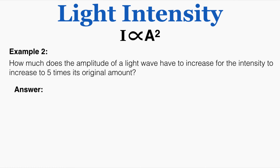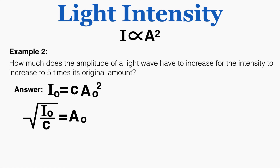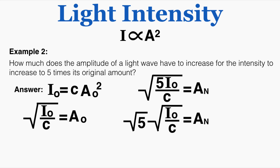In example two: how much does the amplitude of a light wave have to increase for the intensity to increase to five times its original amount? Using the original and new notation, the original intensity equals C times the original amplitude squared. The new amplitude equals the square root of five times the original intensity divided by C. Isolating the original amplitude term, the new amplitude equals the square root of five multiplied by the original amplitude.